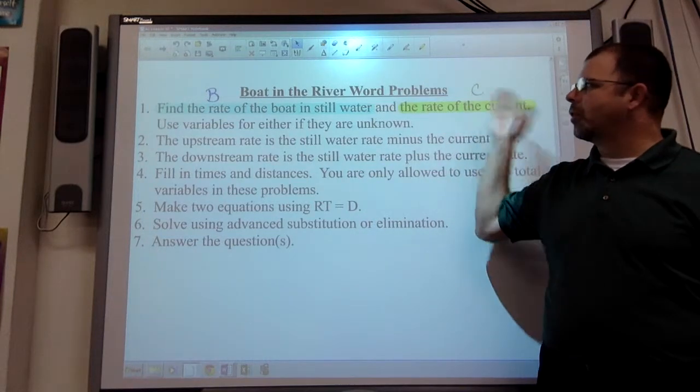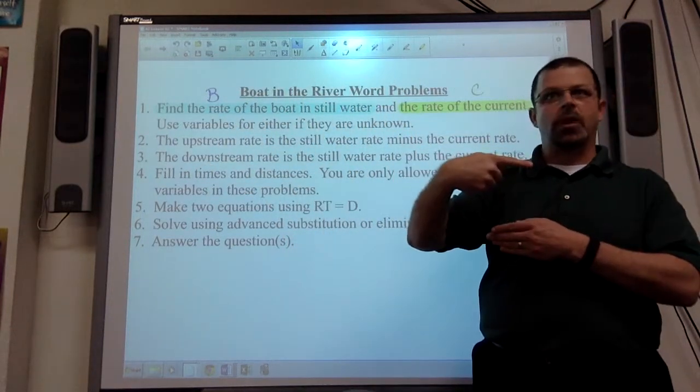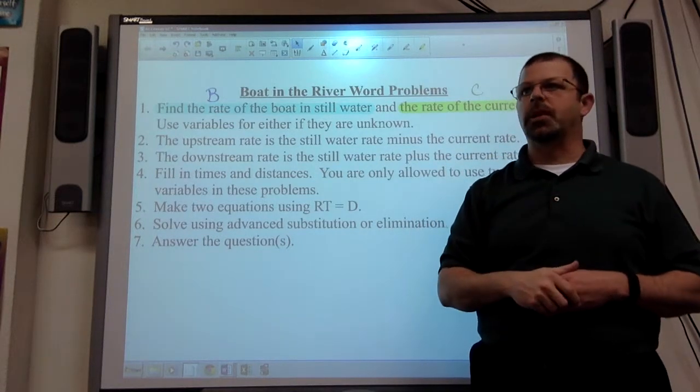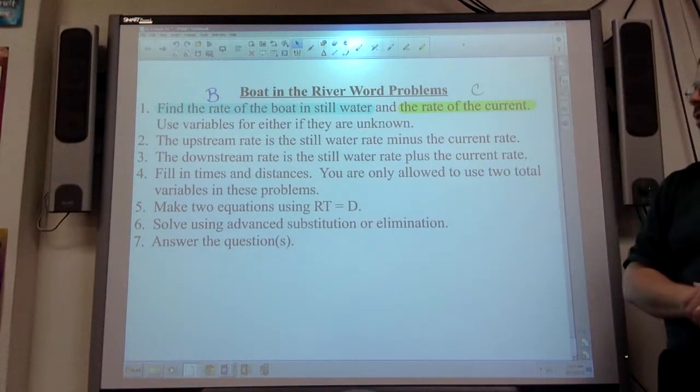If you know the boat, don't know the current, let's say the boat's 20, the current's unknown. Upstream, 20 minus C. Downstream, 20 plus C. So you have the capacity to use these two things in step one to establish the rates.